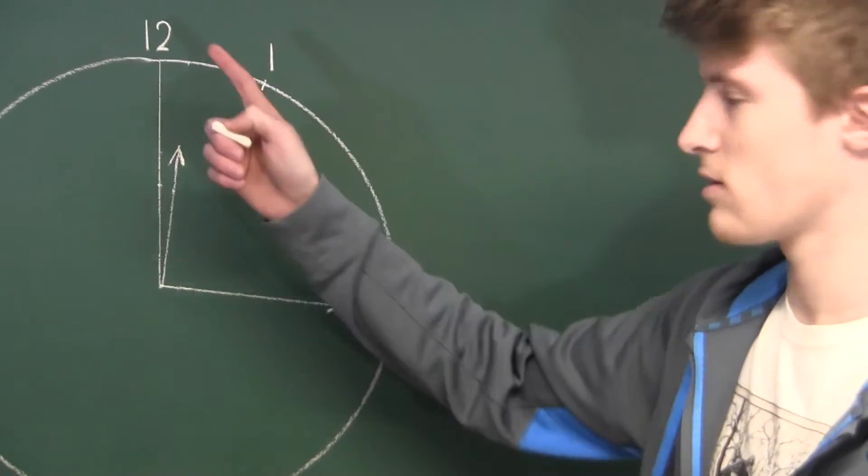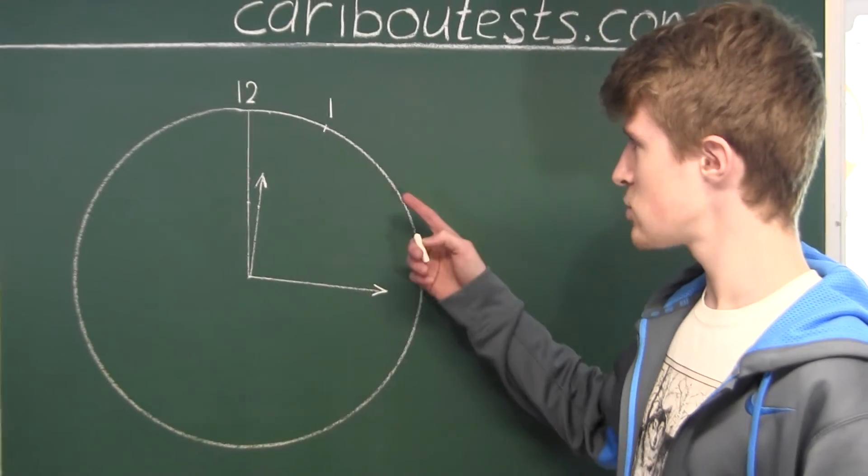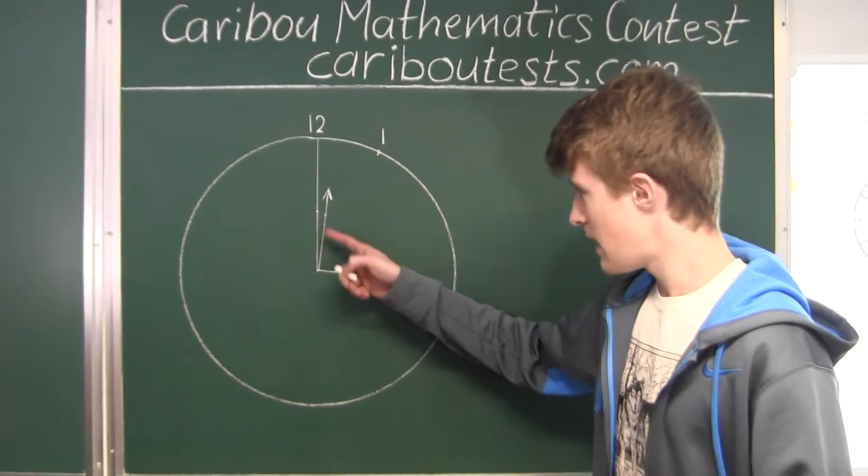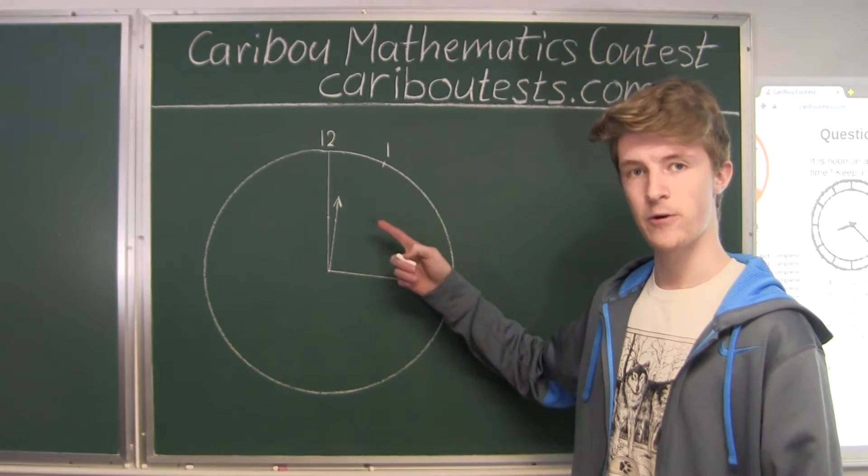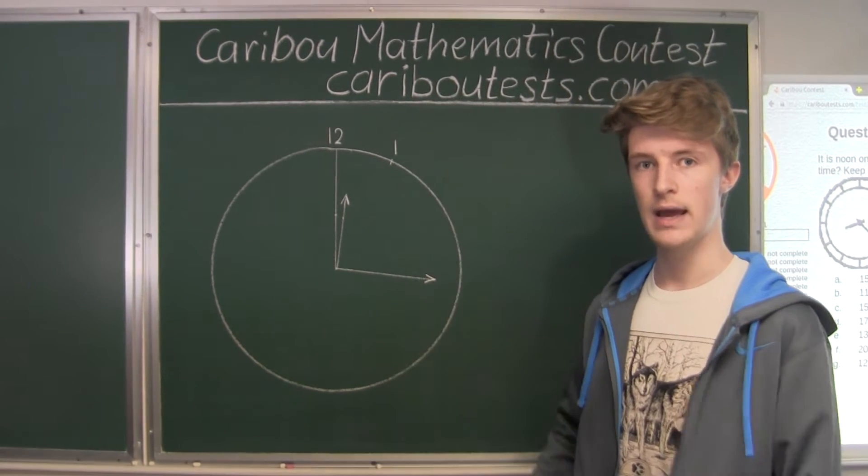So this is the analog clock, and this is a rough sketch of the hour hand and the minute hand for the first time when they form a right angle.